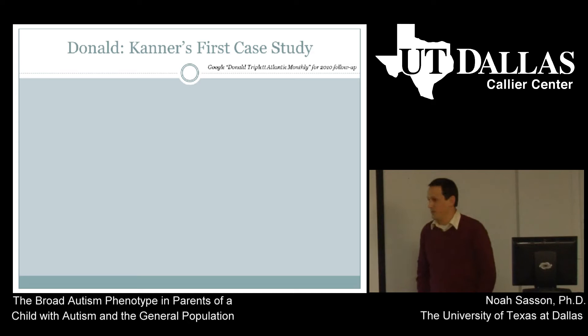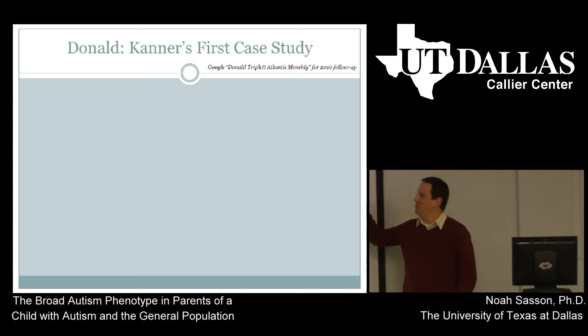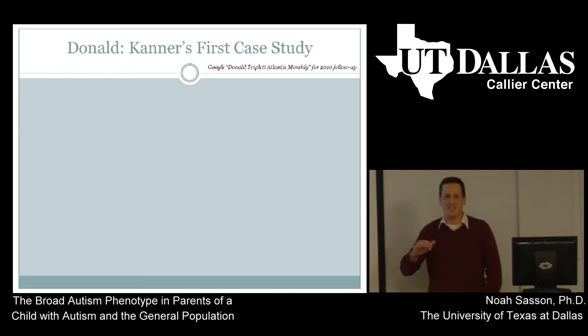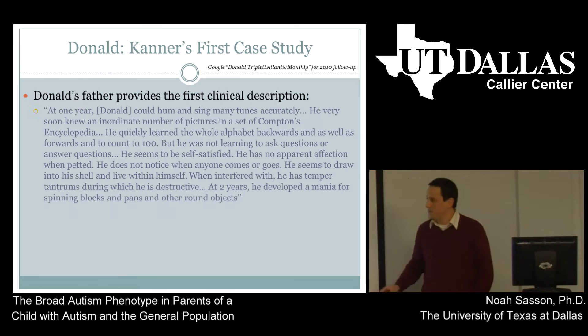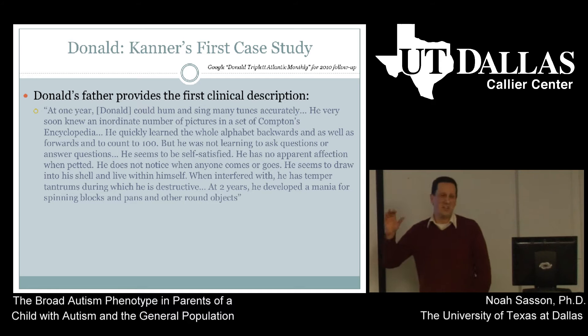Donald Triplett is no longer a child — he is still alive and well. I encourage you to Google 'Donald Triplett, Atlantic Monthly.' That magazine had a fascinating article about him and his life trajectory; he's now in his mid to late 70s. In Kanner's description of Donald, his attention to Donald's characteristics were first brought to him by Donald's father. So the first clinical descriptions of autism actually predate Kanner — some of these parents were providing them.